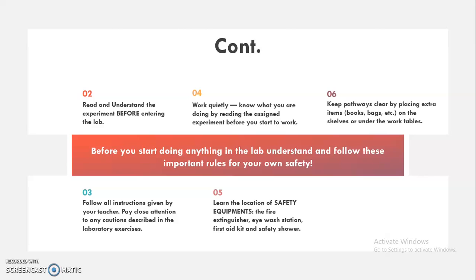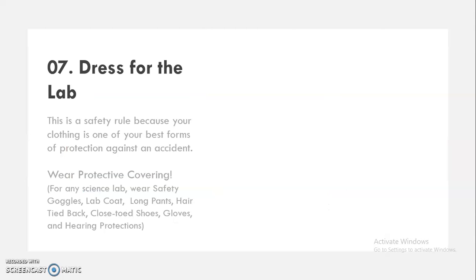Sixth: keep pathways clear by placing extra items such as books and bags on the shelves or under the work tables. If placed under the table, make sure these items cannot be stepped on. Seventh, the last rule in this category, is about dressing. This is a safety rule because your clothing is one of your best forms of protection against an accident.